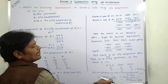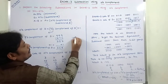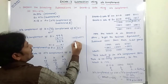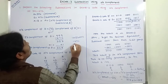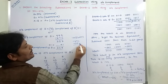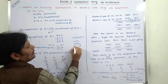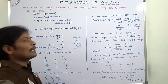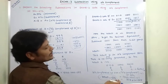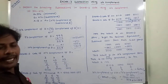Verification step: minus 672 plus 354. Computing: 12 minus 4 is 8, 6 minus 5 is 1, minus 6 plus 3 is minus 3. So the result is minus 318. This result matches the computed result. Hence, we can say that our answer is correct.